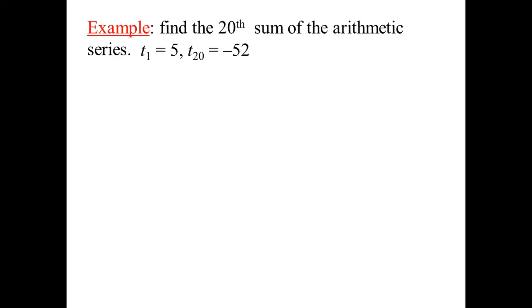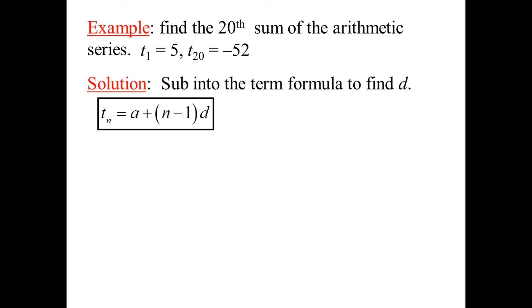Find the 20th sum of an arithmetic series, given T sub 1 is 5 and T sub 20 is negative 52. Sub into the term formula. You see, the term formula steps up and plays a role in this as well. The term formula, which we know to be this. A plus N minus 1 times D.